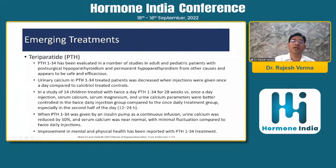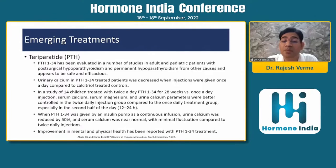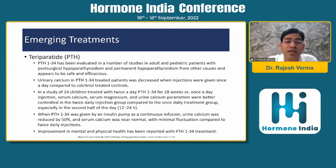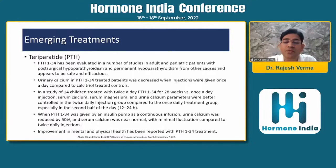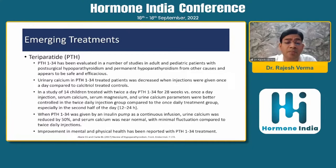The emerging treatment is teriparatide — PTH 1-34. It has been evaluated in a number of studies in adults as well as pediatric patients with post-surgical hypoparathyroidism and permanent hypoparathyroidism from other causes, and it appears to be safe and efficacious. Urinary calcium in PTH 1-34-treated patients was decreased when injections were given once daily compared to calcitriol controls. In a study of 14 children treated with twice-daily PTH for 28 weeks, serum calcium, magnesium, and urine calcium parameters were better controlled with twice-daily injection compared to once-daily treatment, especially in the second half of the day. When PTH 1-34 was given by an insulin pump as continuous infusion, urine calcium was reduced by 50% and serum calcium was near normal with minimal fluctuations compared to twice-daily injections.